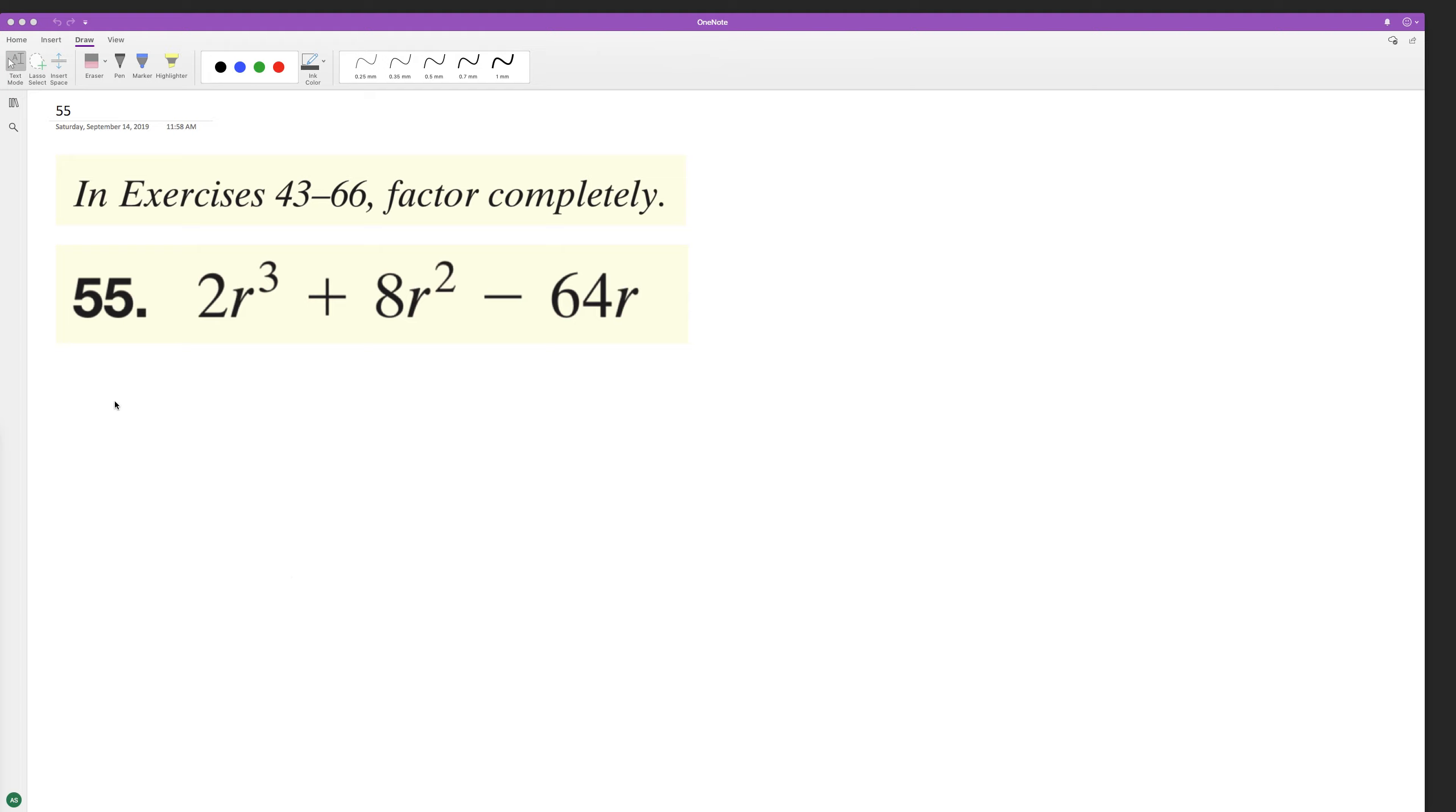Let's factor out a 2r first, so we can get 2r, and we'll have r² + 4r - 32.